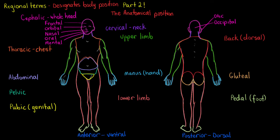I'll make note of the regions that don't have any subdivisions. The cervical region doesn't actually have any subdivisions, so we'll move straight on to the upper limb. The upper limb is divided into your acromial, brachial, anticubital, olecranal, antibracial, and carpal regions.